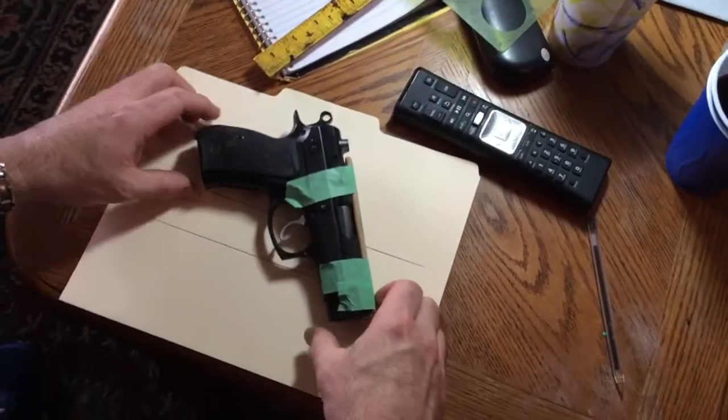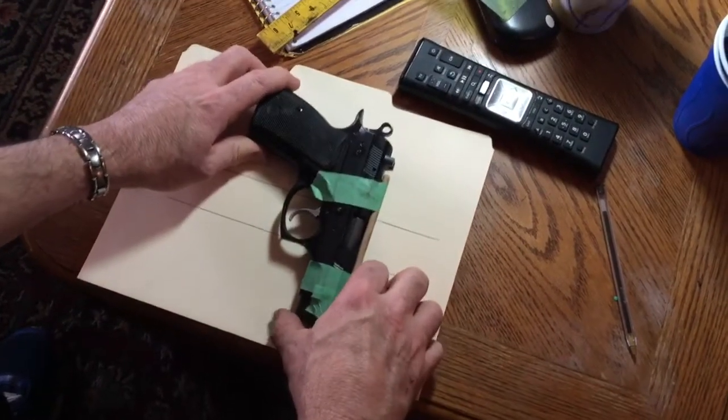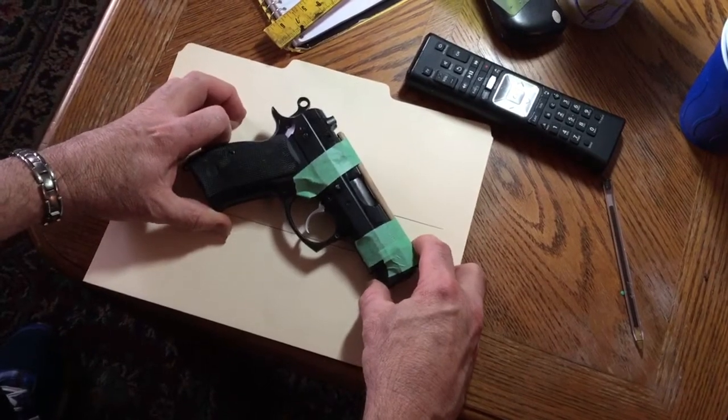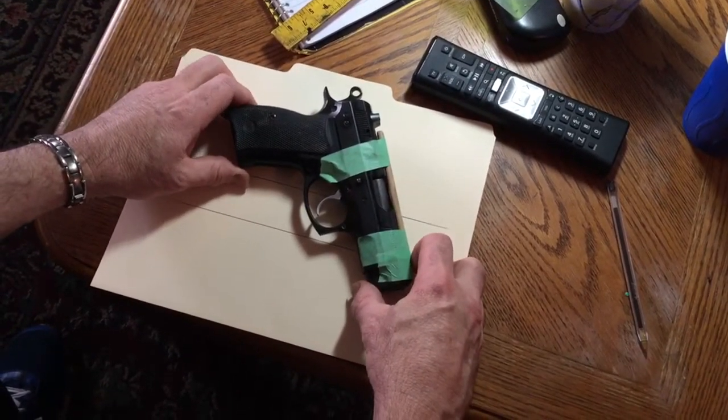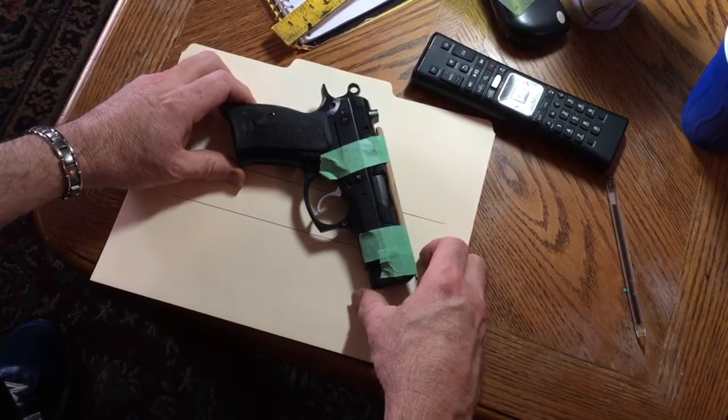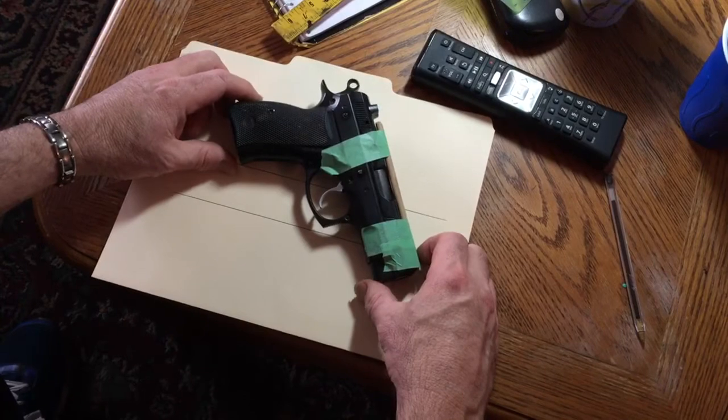The problem he's going to have is with any cross draw. Cross draws can be vertical to almost 45 degrees. He wants enough cant that it's easy to come out of the holster while he's driving, say. But he still wants to be able to get a grip on the gun.